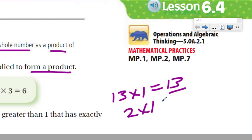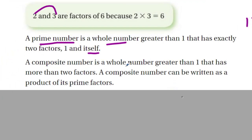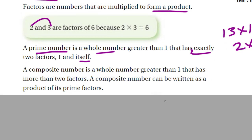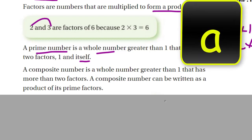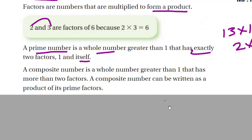Same with two — two times one is two. I can't think of any other factors you could multiply to get two. There are none, therefore we say that two is prime. Now, on the other hand, a composite number is a number greater than one that has more than two factors. And that's important when you're looking at trying to find prime numbers, because a composite number can be written as a product of its prime factors.